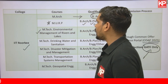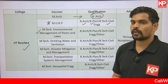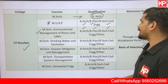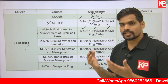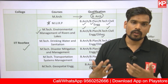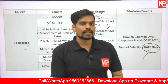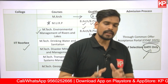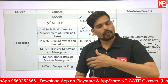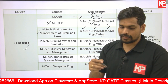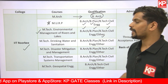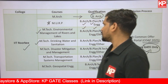Moving to interdisciplinary courses, M.Tech in Environmental Management of Rivers and Lakes at IIT Roorkee is open to B.Arch, B.Plan, and Civil Engineering graduates along with other B.Tech specializations, using various GATE papers. A normalized GATE score will be the basis for selection, irrespective of whether students qualified in GATE Architecture, Civil Engineering, or Mechanical.